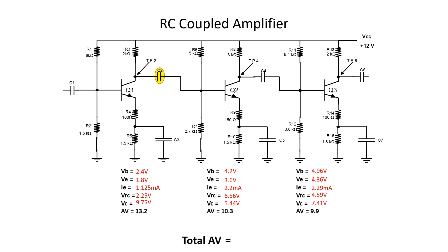The last thing is AV. Do you remember how to calculate the total AV? If you forgot, just multiply the AV of each stage together to get the total AV. If you got 1,346, you calculated correctly. And remember — I did not put any unit of measurement on the end of that AV, otherwise I'd be wrong.